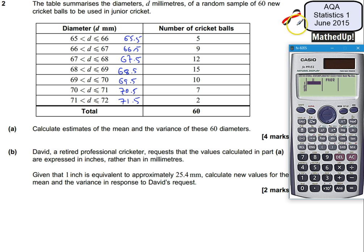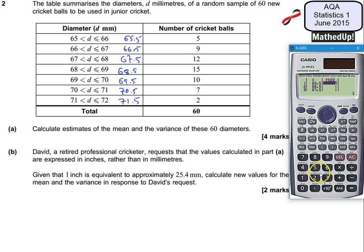I'm going to enter the midpoint values: 65.5, 66.5, 67.5, 68.5, and the remaining midpoints up to 71.5. Those are my diameters. Over in the frequency column I can now put in my frequencies: 5, 9, 12, 15, 10, and 70 — wait, the last entry is 5 and 9. I've now input all my data.